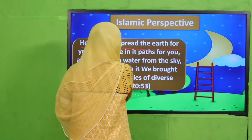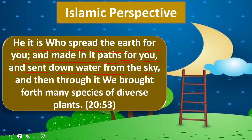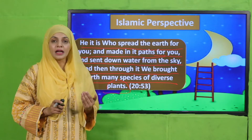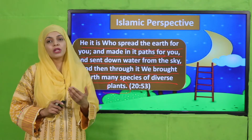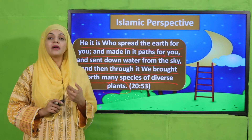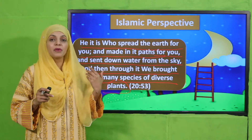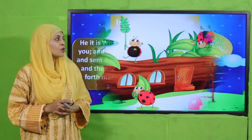Now is the time for the Islamic perspective. Allah says: 'It is He who spread the earth for you and made parts in it for you, and sent down water from the sky, and then through it We brought forth many species of diverse plants.' Allah Ta'ala ne zameen per plants lagaye hain, asmaan se baarish barsaai hai, aur bohut saare mukhtalif tarah ke paude zameen par ugaye hain — jiske baare mein hum ne previous lecture mein bhi parha tha.